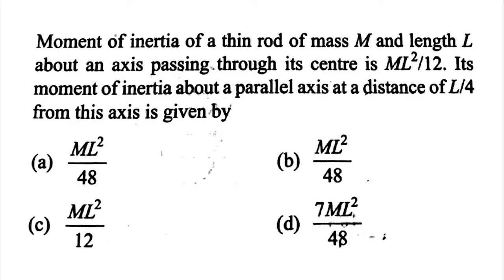Moment of inertia of a thin rod of mass m and length l about an axis passing through its center is ml squared by 12. Its moment of inertia about a parallel axis at a distance of l by 4 from this axis is given by — with 4 options: ml squared by 48, ml squared by 24, ml squared by 12, and 7ml squared by 48.